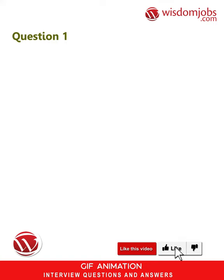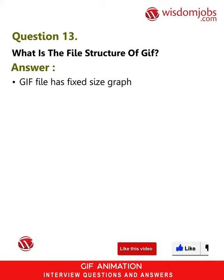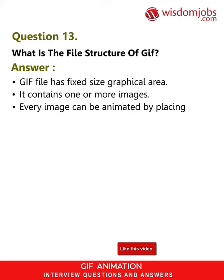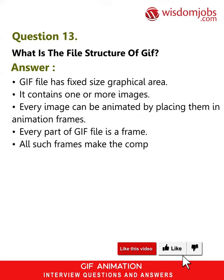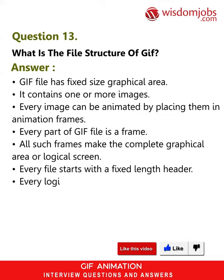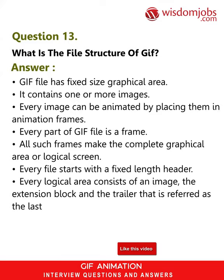Question 13: What is the file structure of GIF? Answer: A GIF file has a fixed size graphical area. It contains one or more images. Every image can be animated by placing them in animation frames. Every part of a GIF file is a frame. All such frames make the complete graphical area or logical screen. Every file starts with a fixed length header. Every logical area consists of an image, the extension block, and the trailer, referred to as the last byte of the file.